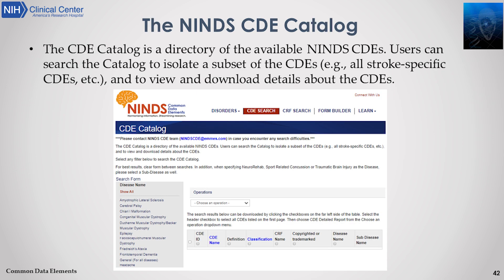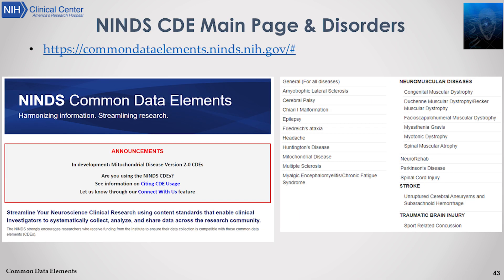NINDS has a catalog — a directory of the available common data elements. Users can search the catalog to isolate a subset, such as those specific to stroke, a specific disease, a specific research type, or a specific level of common data element. The main page shows disorders, announcements, how to cite common data elements, and the different diseases for which CDEs have been defined. There is a link on the slide to learn more.